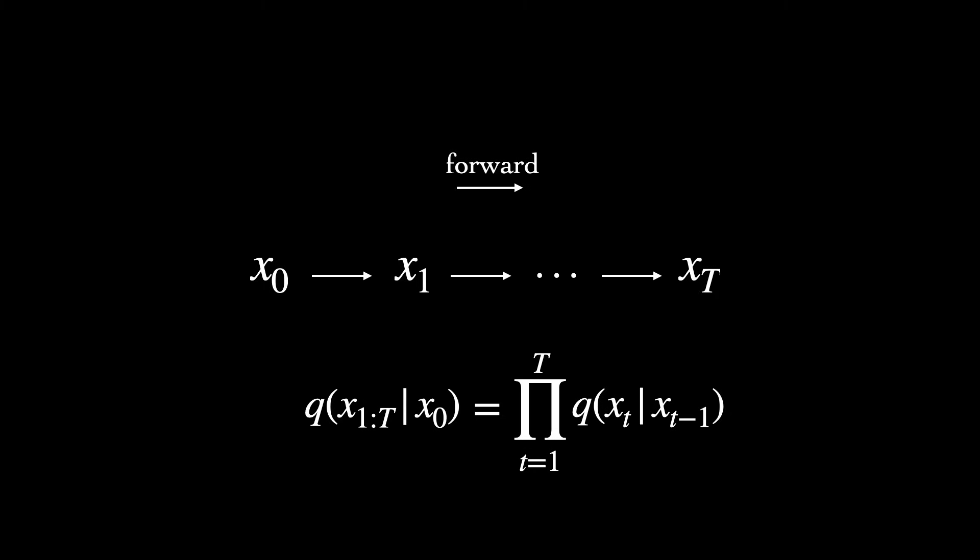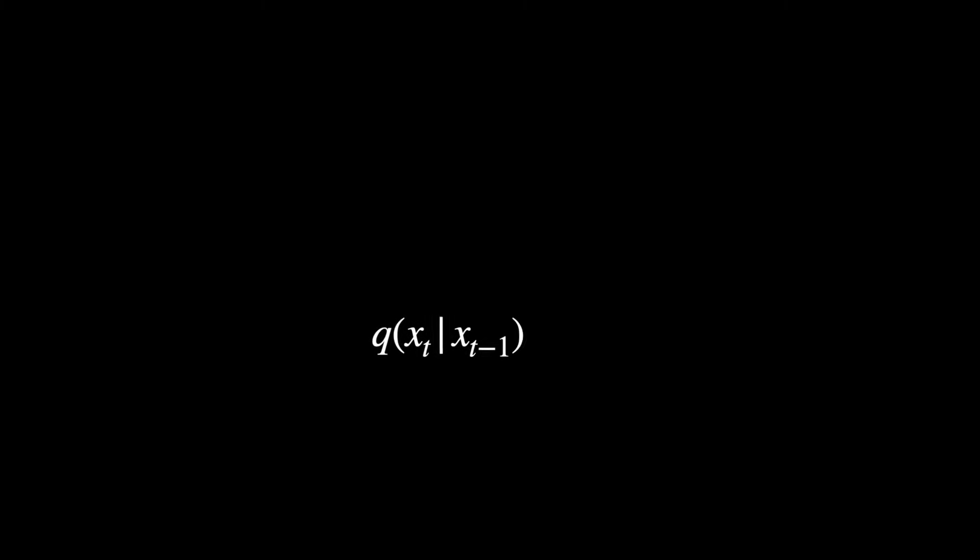In the case of continuous data, each transition is parameterized as a diagonal Gaussian. Beta T here is the variance at a particular time step T.